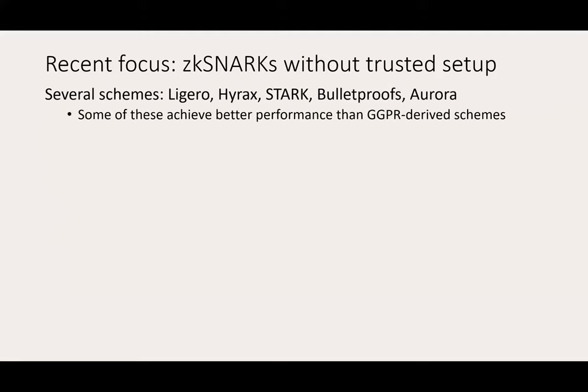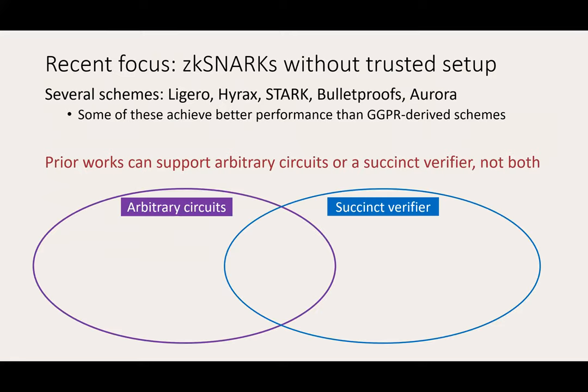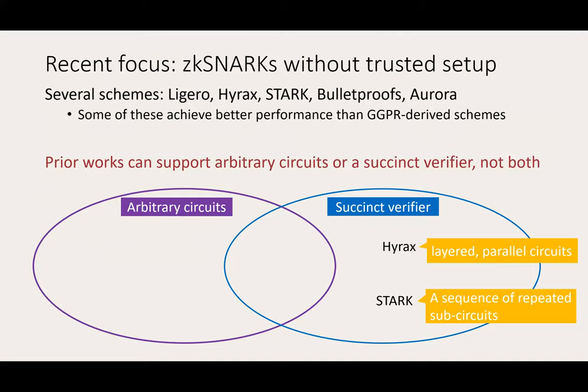This problem has motivated another class of works called ZK-SNARKs without trusted setup. There are several schemes in this class, and some of them even achieve better performance than GGPR-derived schemes. Unfortunately, these existing schemes can support arbitrary circuits or a succinct verifier, but not both. For example, Hyrax incurs a sublinear verification cost, but it is restricted to data-parallel circuits in a layered form. Similarly, STARK supports a succinct verifier, but it requires a sequence of repeated sub-circuits. On the other side, Ligero, Bulletproofs, and Aurora target arbitrary circuits, but the verifier incurs costs that are linear in the size of the statement.